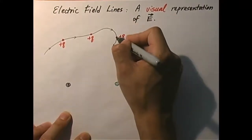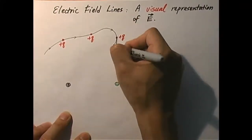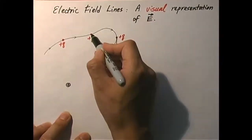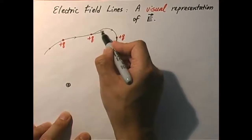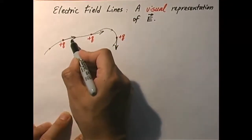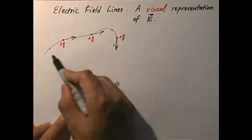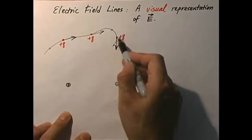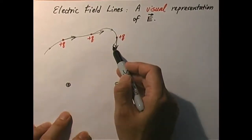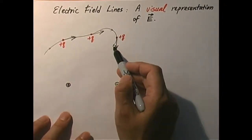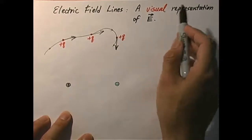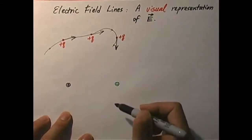For example, the electric field here at this point is like this, there is like this, there is like this — this line is called an electric field line. Why are we interested in electric field lines? Because it gives you a visual idea of the field distribution.